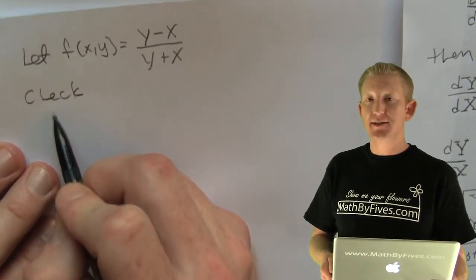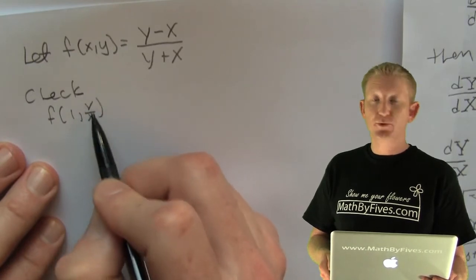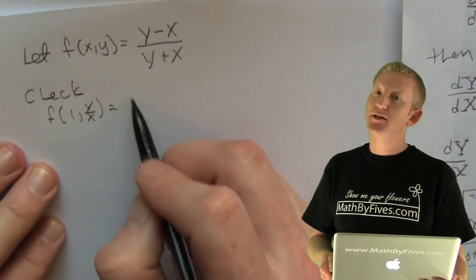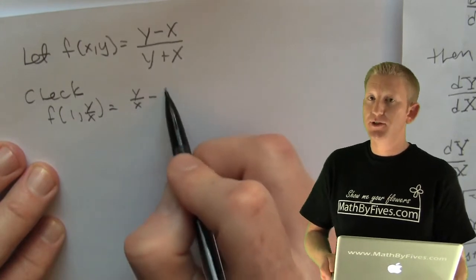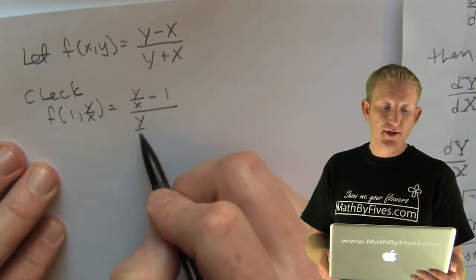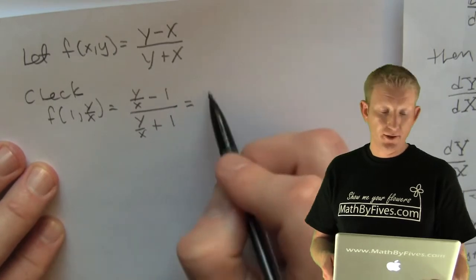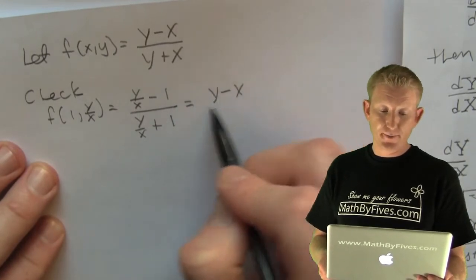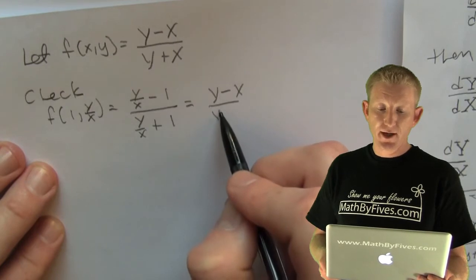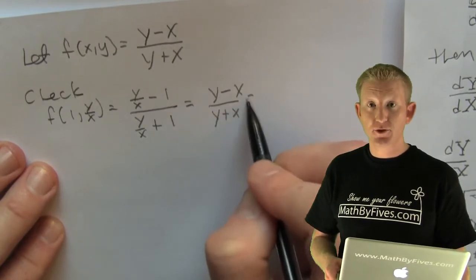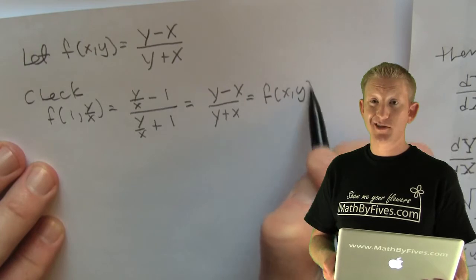He wants to check to see whether or not f of xy is equal to another function in just one variable with the classic substitution g of y over x. So what's he doing? He's using that mapping from his two-space into his one-space to see if that's the original function. And if it turns out that it is, then it's homogeneous, and we can use that substitution.